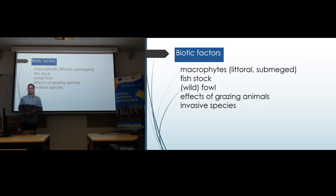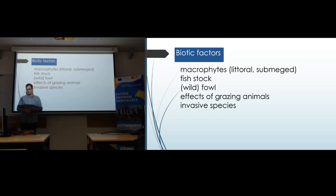Biotic factors are also very important. Macrophytes — both littoral and submerged vegetation — can influence diversity significantly. They provide sheltering possibilities for freshwater animals, but they can also influence the uptake of nutrients, which can further affect possibilities for freshwater insects.